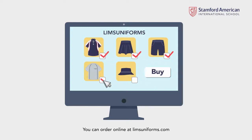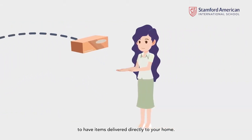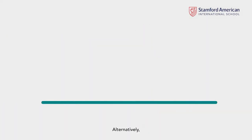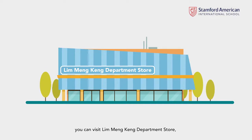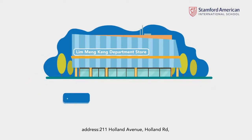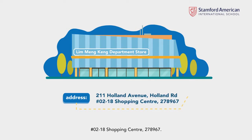You can order online at limuniforms.com to have items available for the first day of school, delivered directly to your home. Alternatively, you can visit Lim Mong Keng Department Store at 211 Holland Avenue, Holland Road, #02-18 Shopping Centre, 278967.